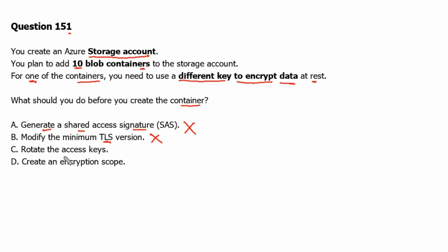Option C: Rotate the access keys. These keys can be used to authorize access to data in the storage account via shared key authorization or via shared access signature tokens that are signed with the shared key. So it is again related to access, not related to encryption. Therefore, this will not be the correct one.